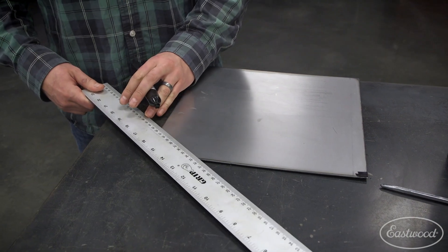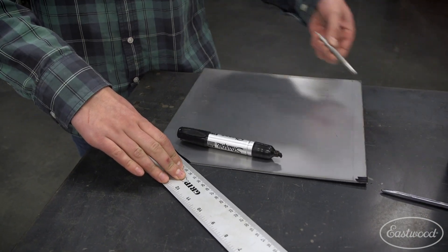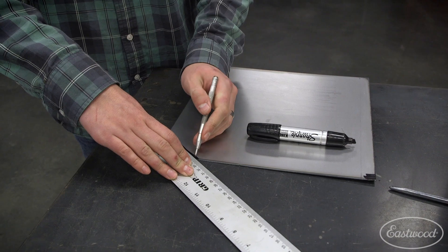Now you can mark that so we can cut that off. We're going to use a carbide scribe just like we would with die cam or layout fluid.